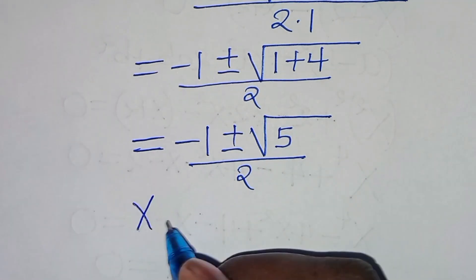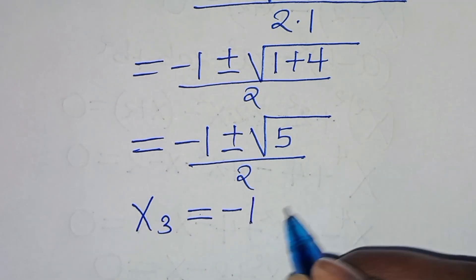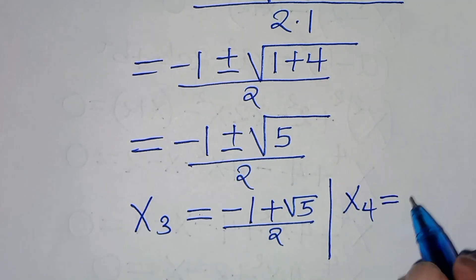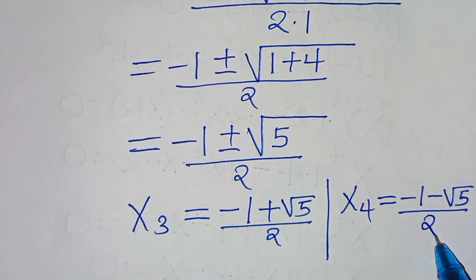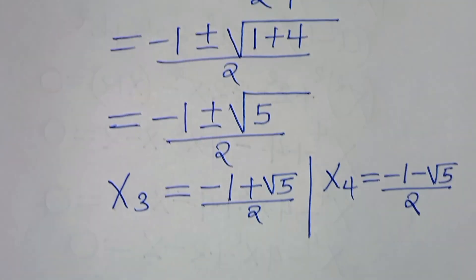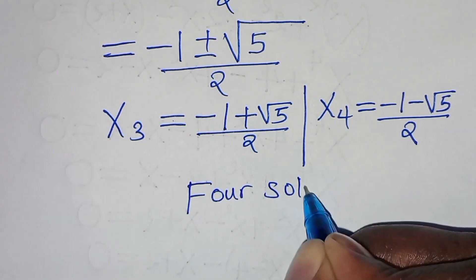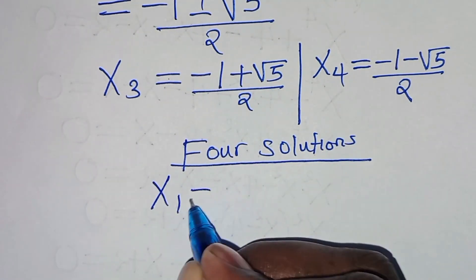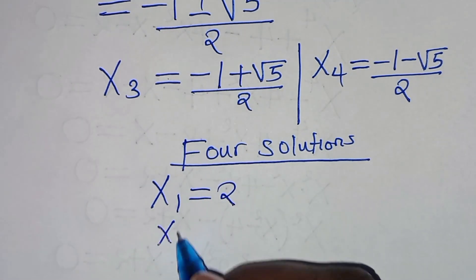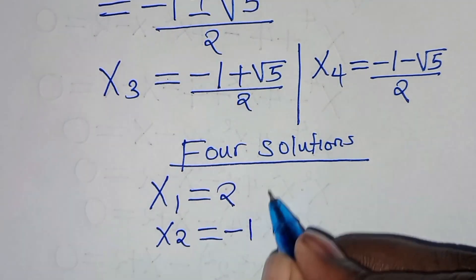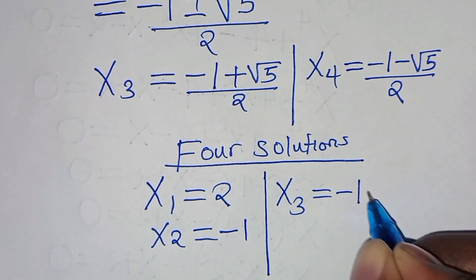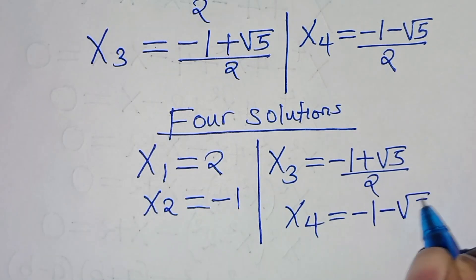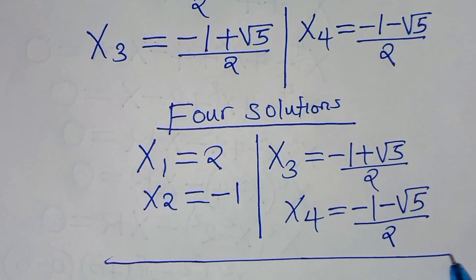So we have that x₃ is equal to minus 1 plus square root of 5, divided by 2, and x₄ is equal to minus 1 minus the square root of 5, divided by 2. This implies that we have four solutions to this algebra problem: x₁ equals 2, x₂ equals negative 1, x₃ equals (minus 1 plus √5) over 2, and x₄ equals (minus 1 minus √5) over 2.